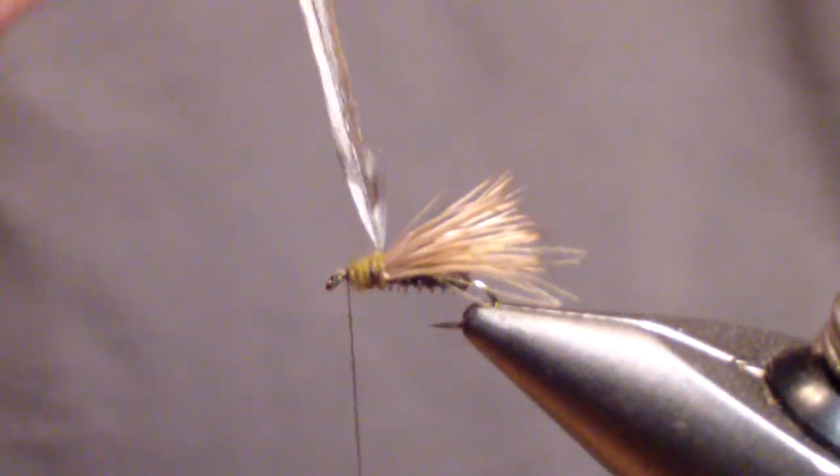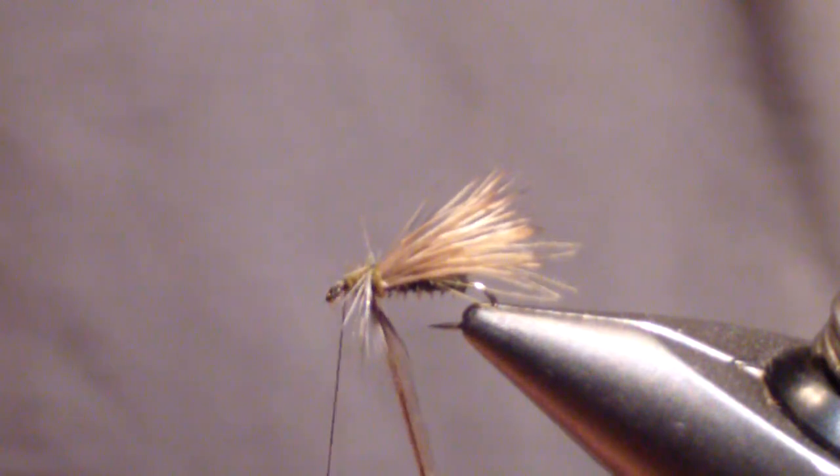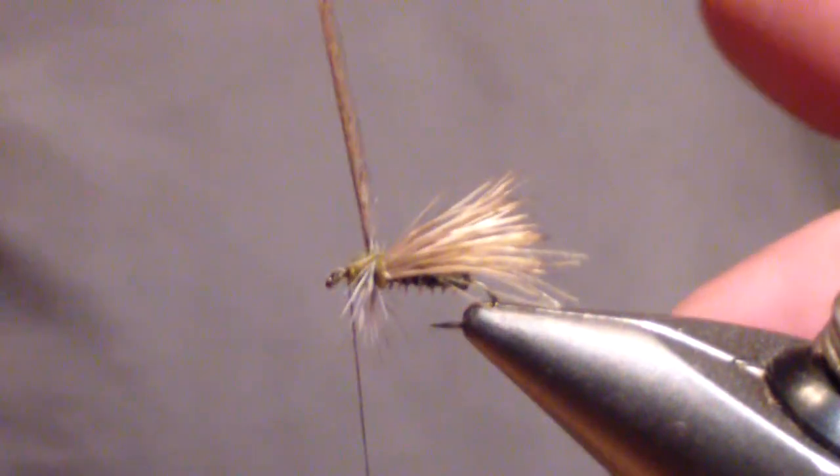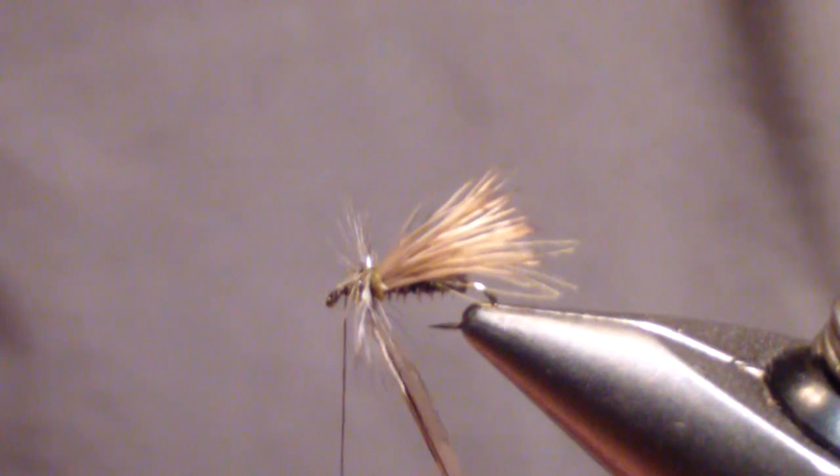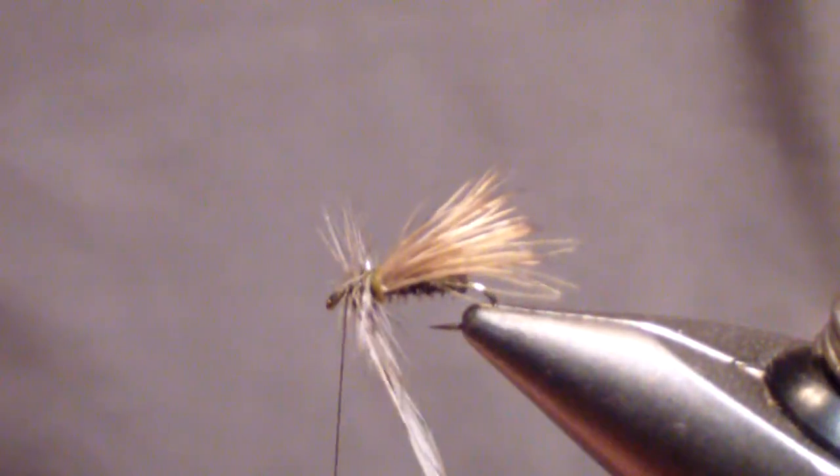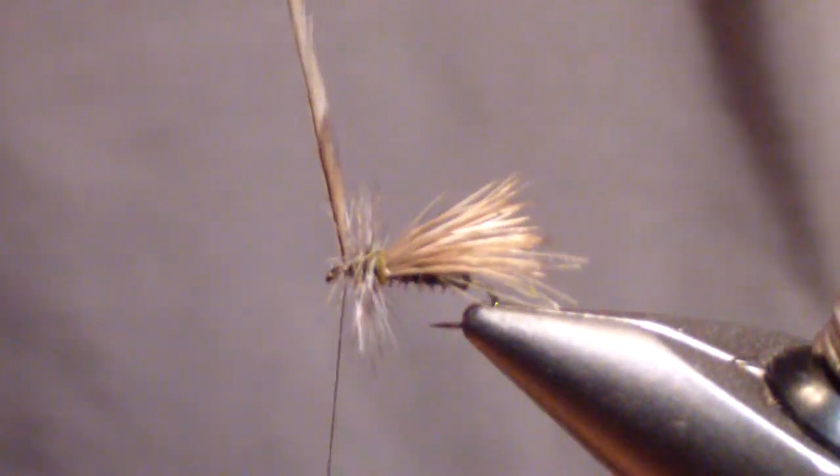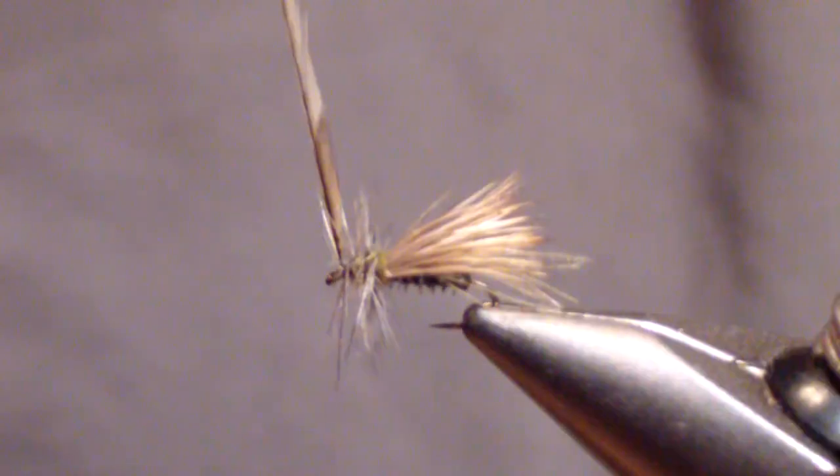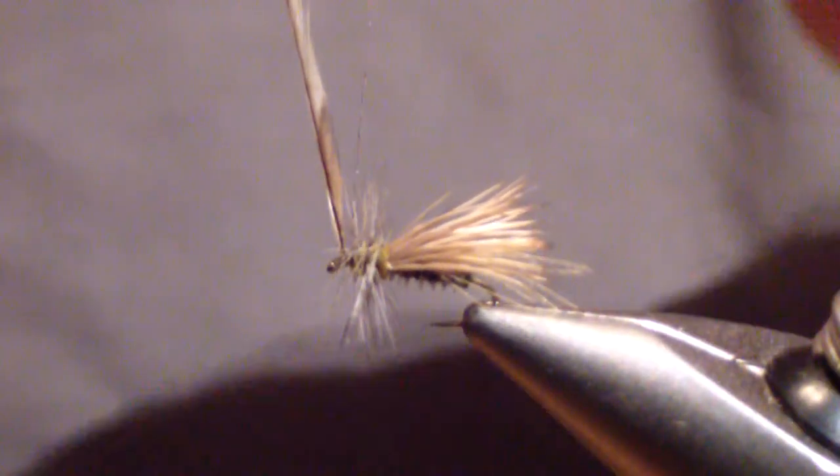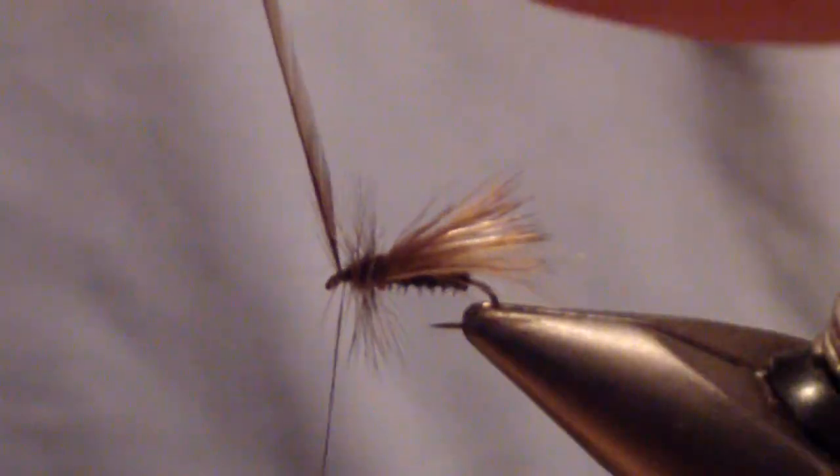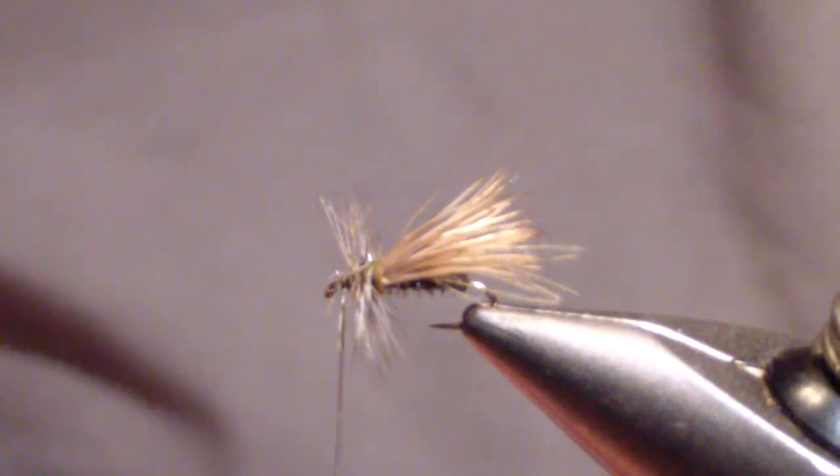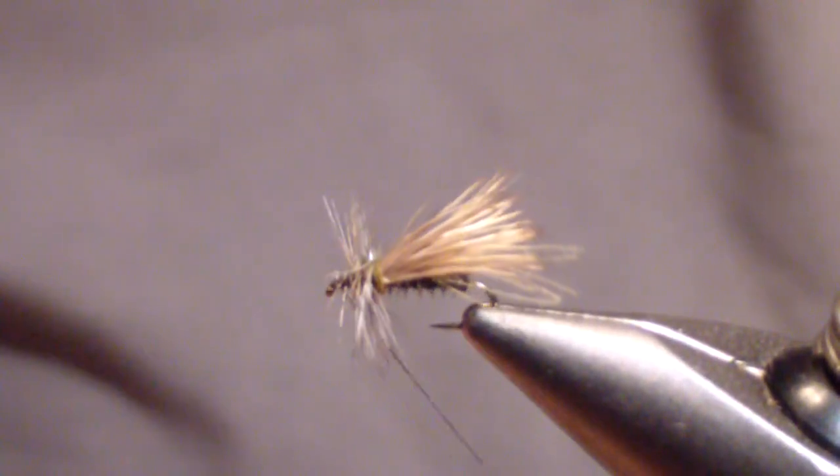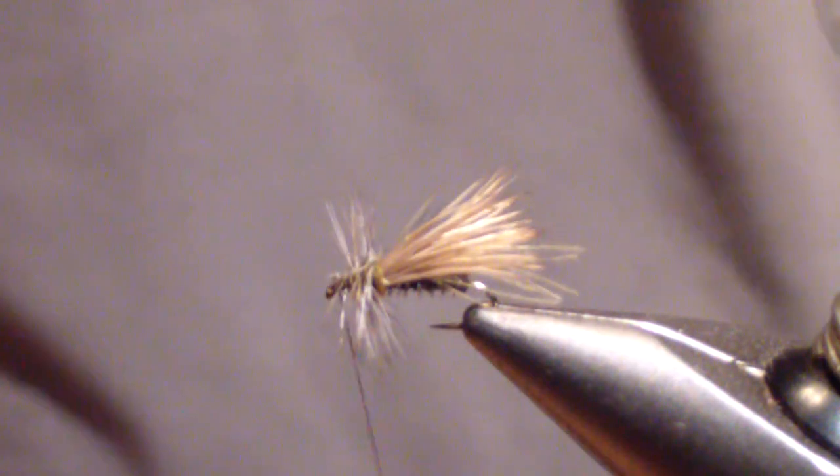Then you're going to bring your hackle forward. This is kind of like stimulator pattern style. I put one wrap right behind the thorax and then wind my thorax forward. You don't want too sparse of a hackle because you're going to trim the bottom. Then whip finish.